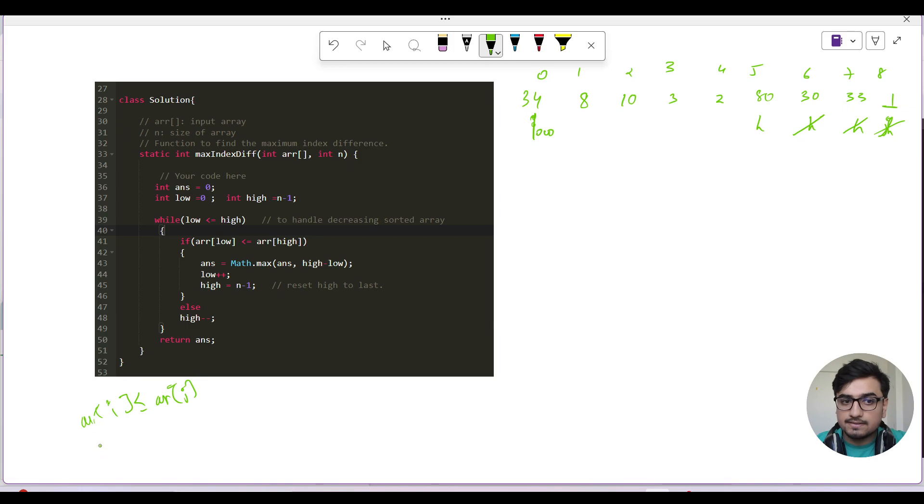Array[i] is less than or equal to array[j], so we store the maximum. What is j minus i? The possible answer is 34 and 80, and the difference between their indices is 5 minus 0, that is 5. Now, I can say we don't need to check because 34 has made a pair. If there is any element in between, it will not give maximum possible answer j minus i. That's why we skip this iteration. Whenever we get an answer, we do low plus plus, and high equals n minus 1. We always start from the end to get maximum difference.